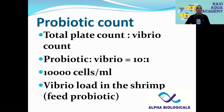Most farmers ask what level of Vibrio is acceptable in pond water. Some say less than 100, less than 50, or less than 30, but that is not correct. The exact answer is: if the total plate count to Vibrio ratio is 10 or more to 1, your system is safe. If the ratio is less than 10 to 1, you are at risk. Even if your bacterial count is high, as long as the total bacteria to Vibrio ratio is more than 10 to 1, your system is safe.